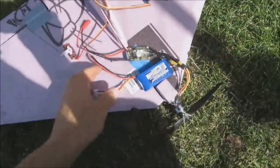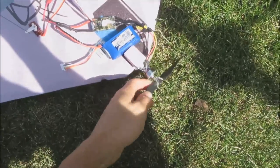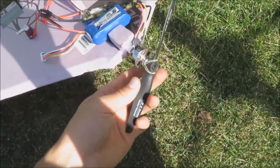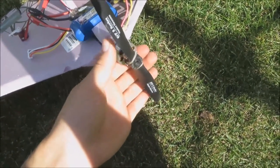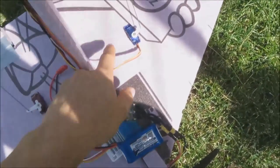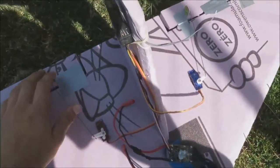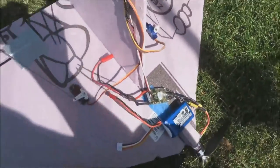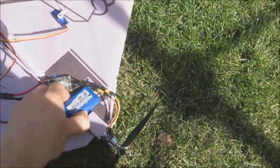In the front, it's got a Blue Wonder 1300 kV motor spinning a 7 by 6 prop. It's got a 20 amp ESC, two 9 gram servos to control the elevons, and a 3S 500 mAh LiPo battery to power everything.